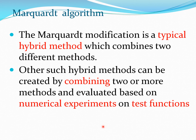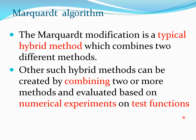One of the reasons the Marquardt method appears in most books is that it is a typical hybrid method which combines two methods. Steepest descent has certain good properties and the Newton method has certain good properties, and combining them may yield a better method. Whenever you create a hybrid method, you need to test it by performing a plethora of numerical experiments on different test functions. Many such test functions can be found by searching Google or in optimization textbooks, and you must verify that the proposed method actually performs well.